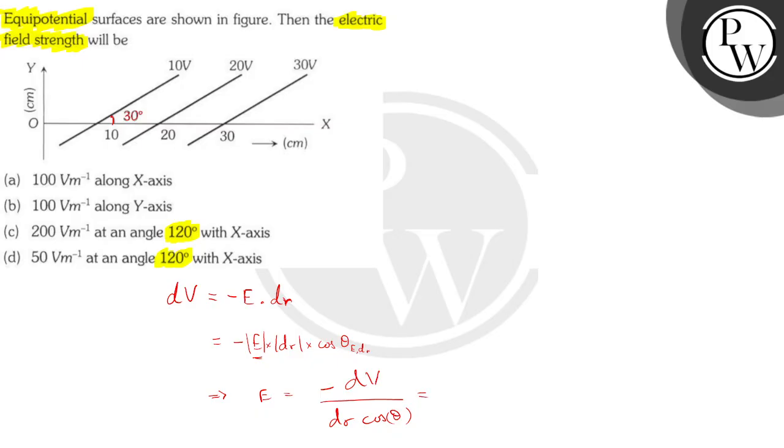Now, since equipotential surfaces are at an angle of 30 degrees, the electric field will be perpendicular to these equipotential surfaces. So the electric field will be going in this manner in any direction, but it will be perpendicular to the equipotential surfaces. So the angle with the x-axis will become 120.